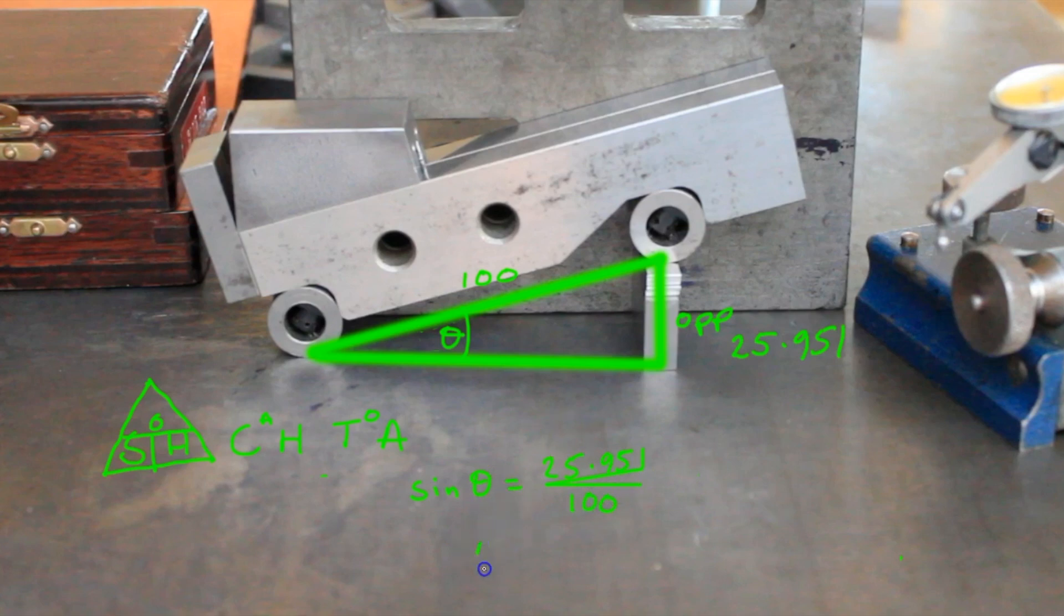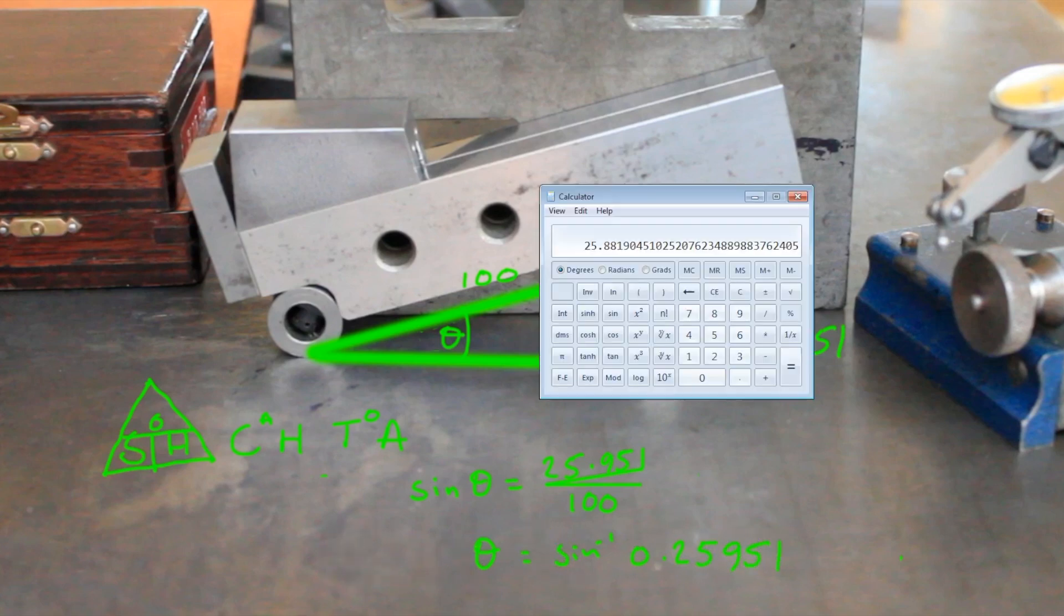So we need to process that, and to find out theta we're going to use the inverse sine of this, which would be 0.25951. Again, we'll put that in the calculator.